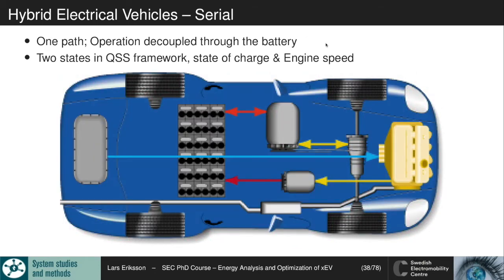Then we have the series hybrid vehicle where we have one path going from the fuel combustion engine generator through power electronics and battery out to the wheels. One path is one-way and one part is two-way, with the power electronics and the battery in between. In this case we have two degrees of freedom: the kinetic energy of the engine that we can optimize in terms of operating points, and the other degree of freedom is the storage of the battery.